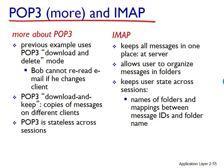A problem with download-and-delete mode is that the recipient may be nomadic and want to access mail messages from multiple machines. Download-and-delete mode partitions the user's mail messages across those machines — if the user reads a message on his office PC, he won't be able to re-read it from his home laptop later. In download-and-keep mode, the user agent leaves messages on the mail server after downloading them, so the user can re-read messages from different machines. The POP3 server maintains state information within a session but does not carry state information across POP3 sessions, which greatly simplifies the server's implementation.